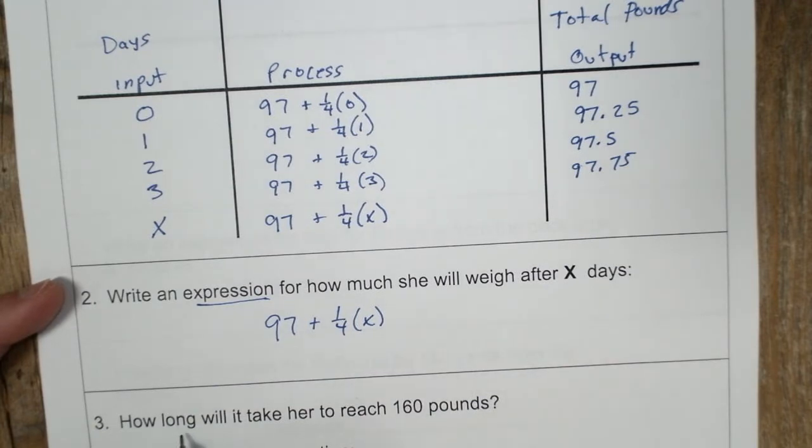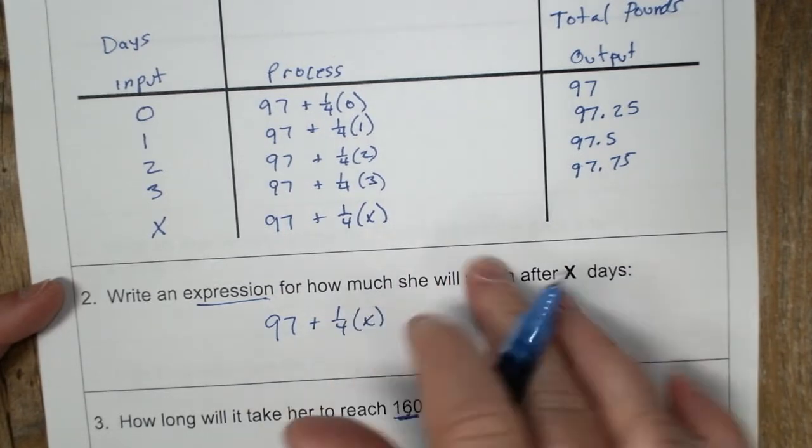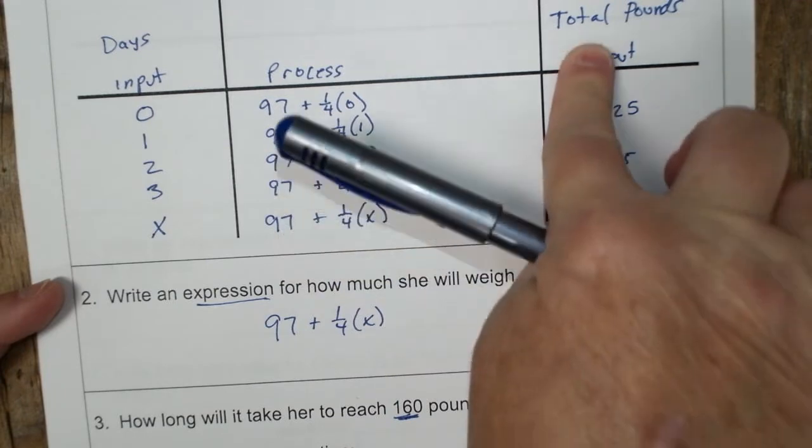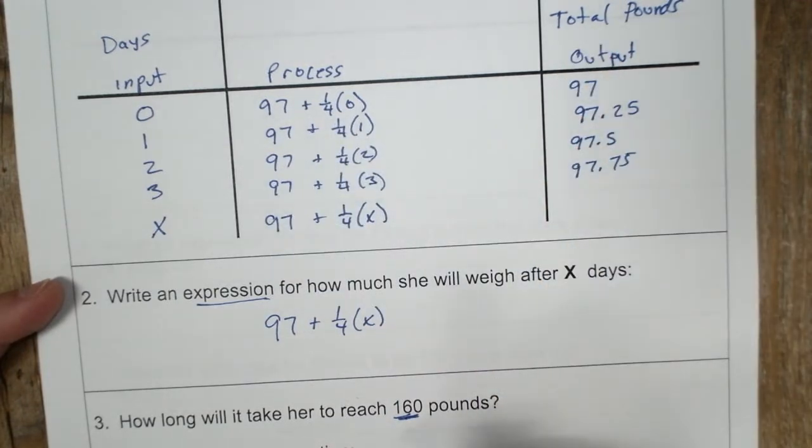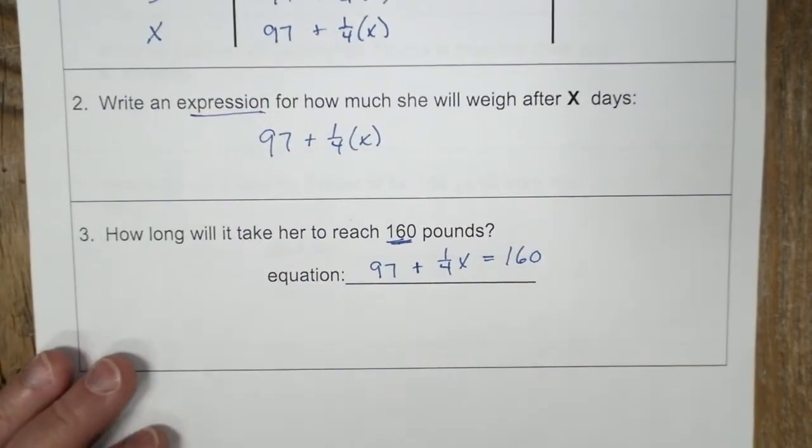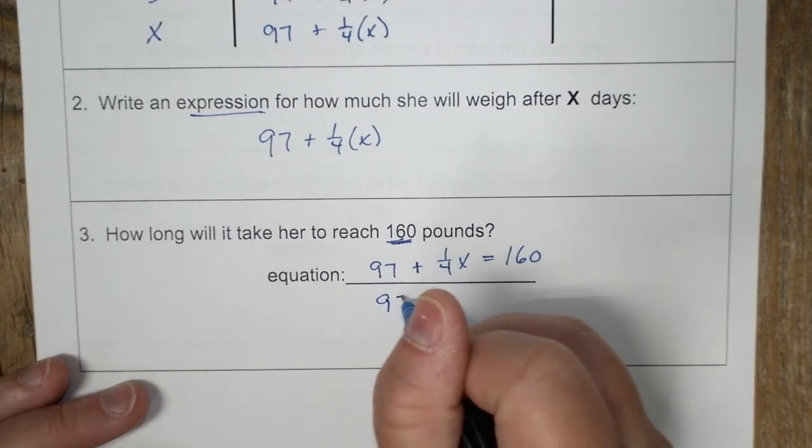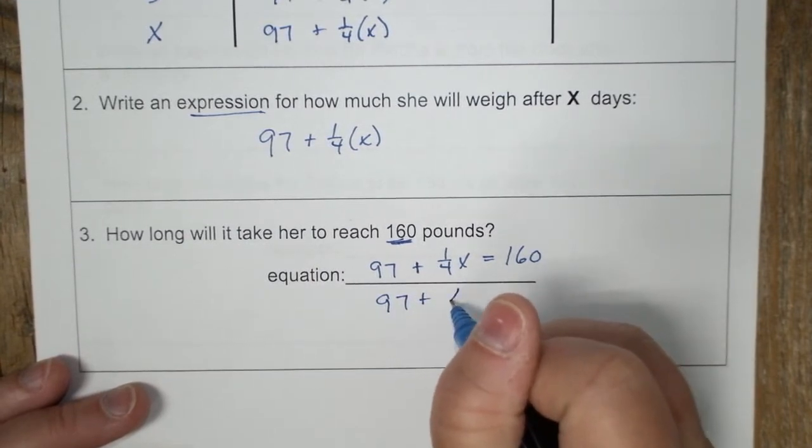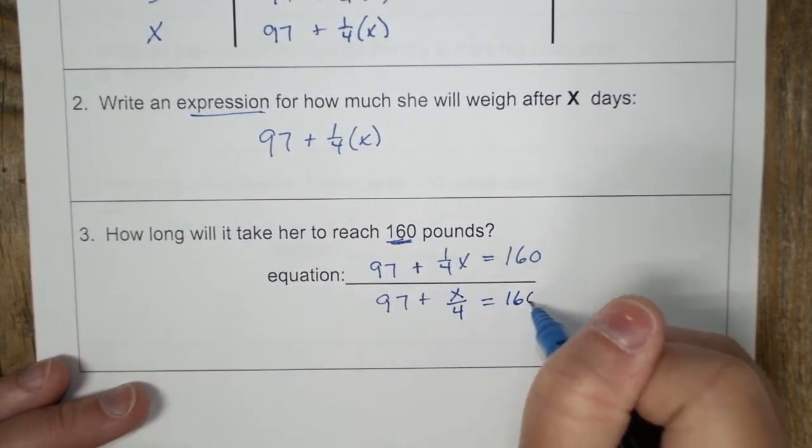Then it says, how long will it take her to reach 160 pounds? Now we have a specific time. This is pounds and pounds was up in our output. So you're going to say 97 plus one fourth X equals 160. Oh sorry, you can't see. Let me move it up. Then I'm going to just rewrite it for ease of looking is 160.